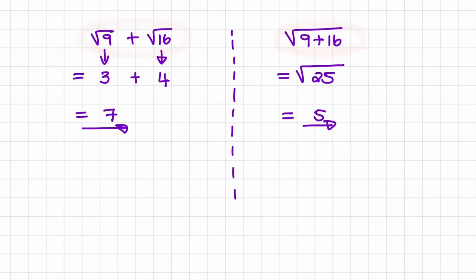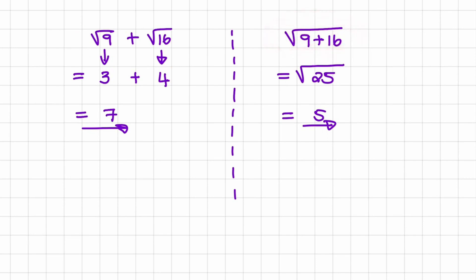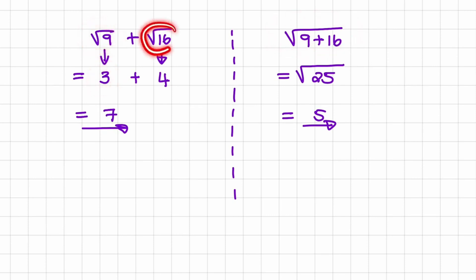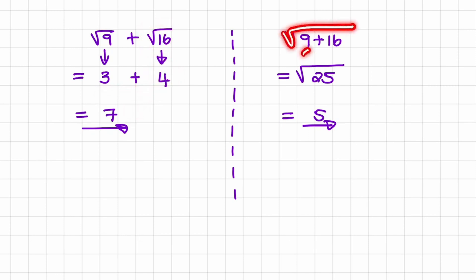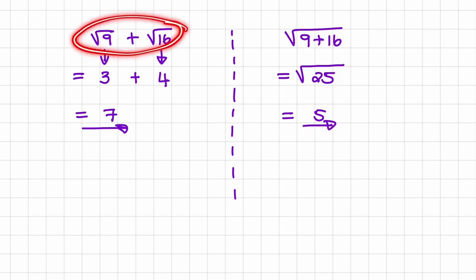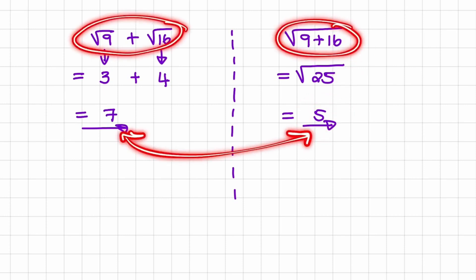And the square root of 25 is equal to 5. Now notice, the two sums look almost exactly the same. The only difference is, in the first sum, we added two square roots together. And in the second one, we added together inside of the square root. So in the first example, we first take the square root of 9 and the square root of 16 and then add those results together. But in the second example, because it's all under one square root, we first do the calculation inside to find 25, and that answer is 5. So even though they look the same, they do not produce the same answer.